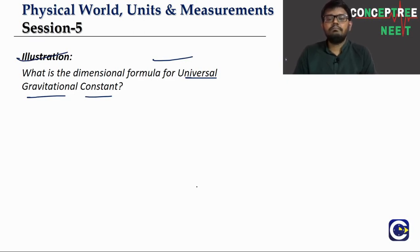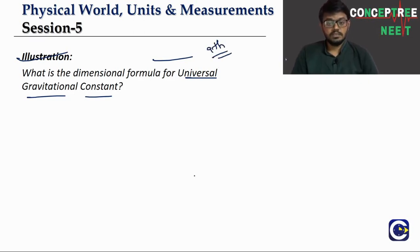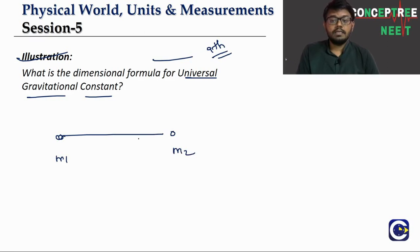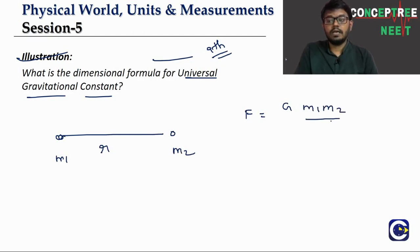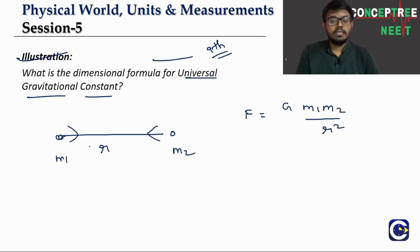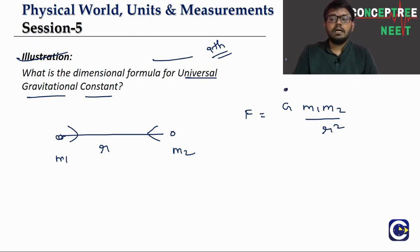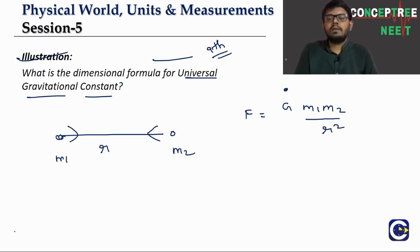This will come in our gravitation chapter. But we have basic understanding from 9th standard. If you have two masses M1 and M2 separated by a distance R, then the gravitational force of attraction between them is given by F = G M1 M2 / R². This is Newton's law of gravitation.